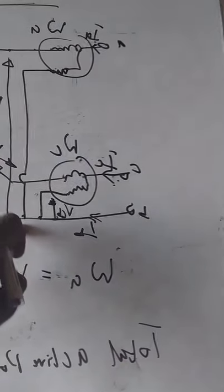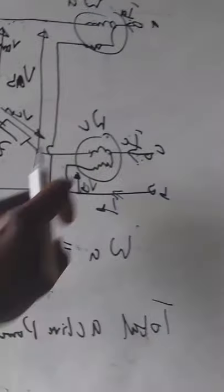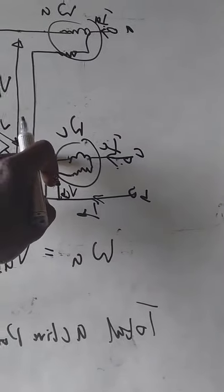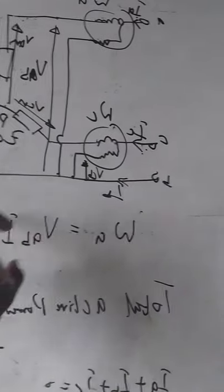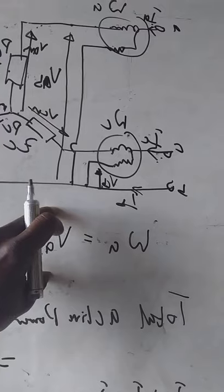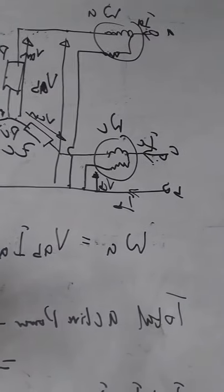Likewise, watt meter C will be the voltage VCB times IC. So now we want to prove that these two watt meter readings when you add them together, WA and WC, must be able to give you the total active power in the load.